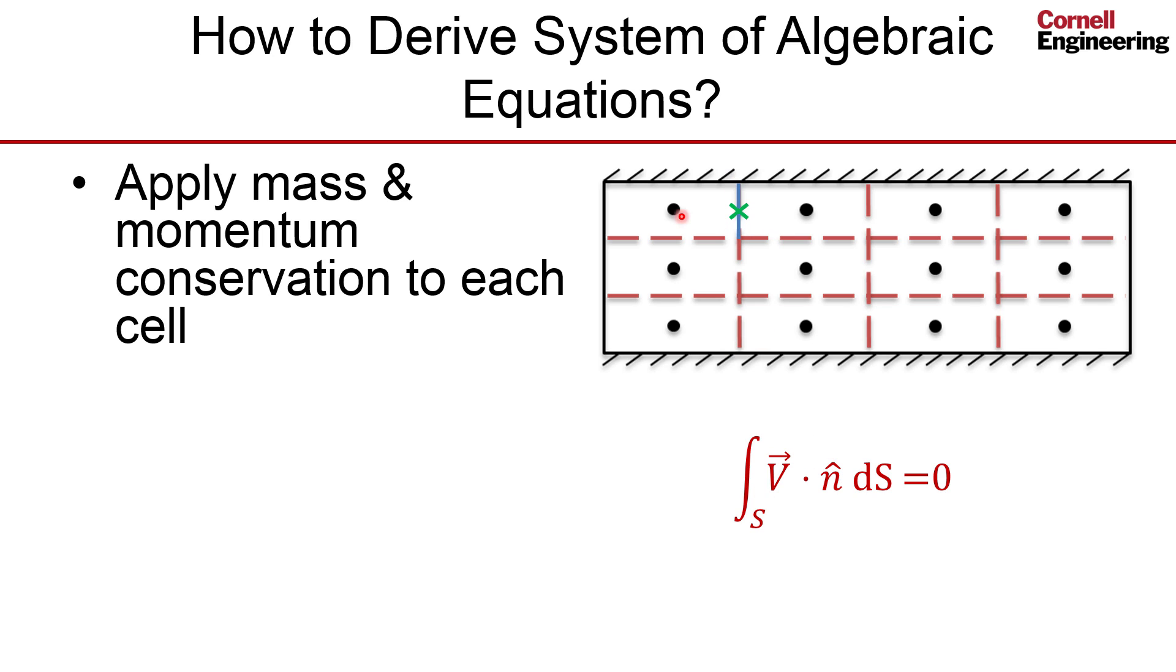Whereas when we do this, when we calculate the integral, we will interpolate between this value and this value. So you can either do it based on physical arguments, or you can go back to the integral. And for simple problems, you will get the same result. And that's the nice thing about the finite volume method, that it's very physical.